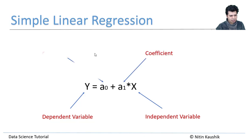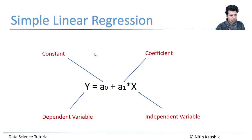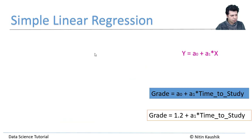a₁ is the coefficient for X, the independent variable, and this coefficient tells how a unit change in X affects Y. We can't say a change in X always equals a change in Y — there's a coefficient by which the change might be inflated or deflated. a-naught is a constant term, which is the point where the best fit line crosses the vertical axis.